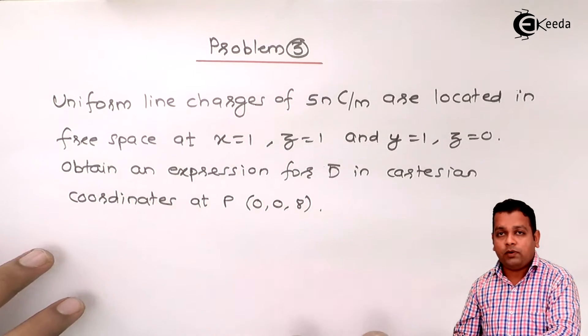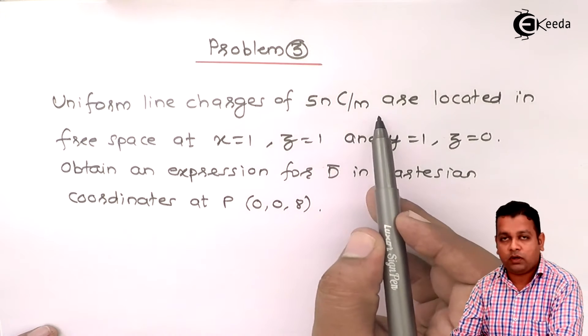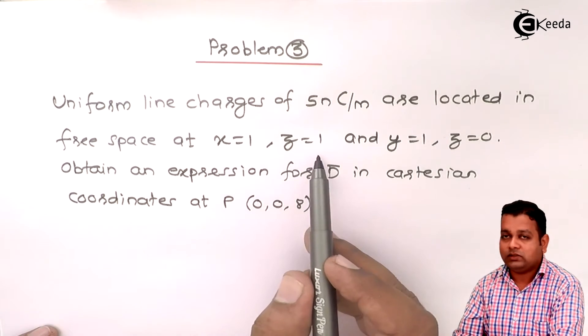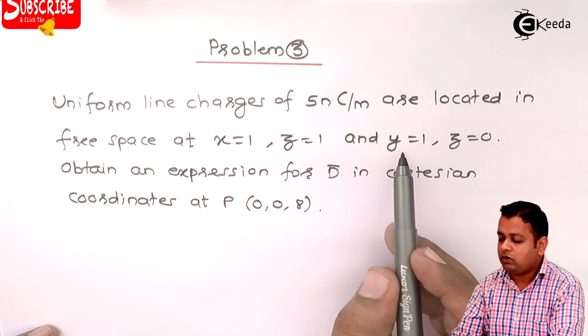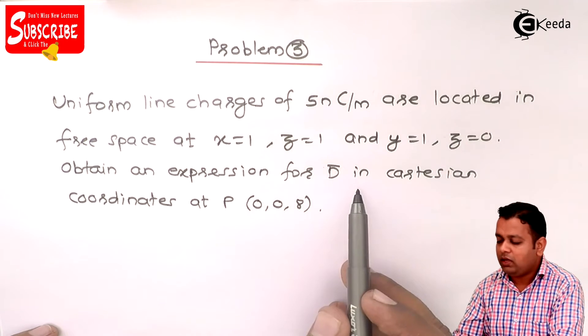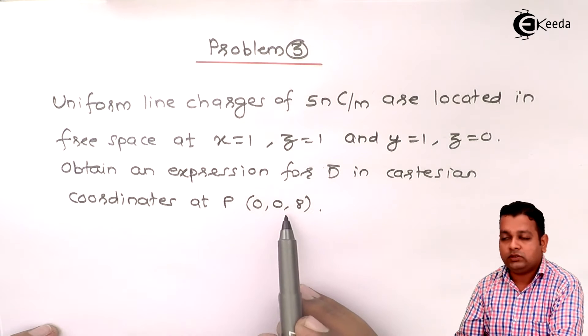Now the problem statement is: uniform line charges of 5 nC per meter are located in free space at x equals 1, z equals 1, and y equals 1, z equals 0. Obtain an expression for D bar in Cartesian coordinates at point T having the coordinate values 0, 0, 8.